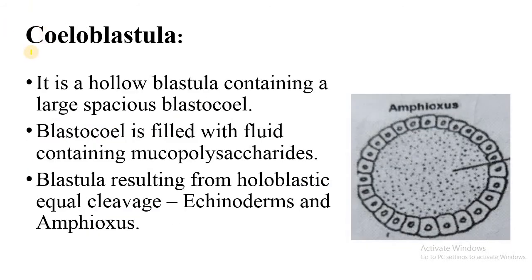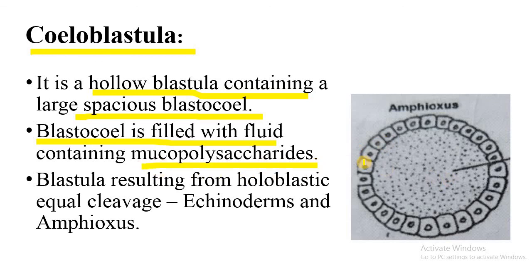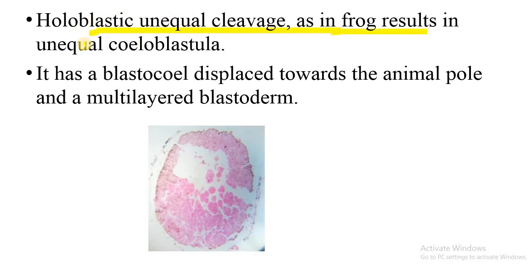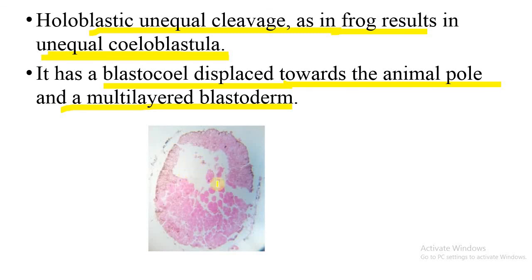The next type of blastula is coeloblastula — a hollow blastula containing a large spacious blastocoele. The blastocoele is filled with fluid containing mucopolysaccharide. This blastula results from holoblastic equal cleavage, as in echinoderms and amphioxus. Holoblastic unequal cleavage, as in the frog, results in an unequal coeloblastula with the blastocoele displaced towards the animal pole and a multilayer blastoderm.